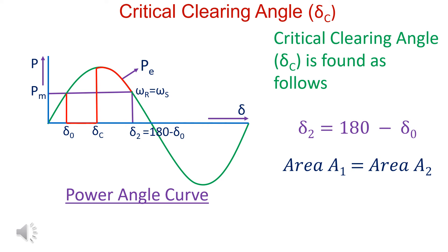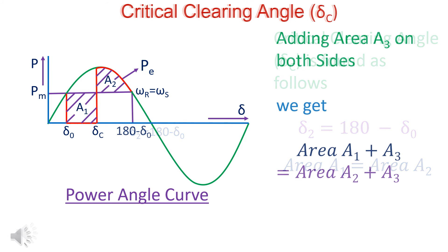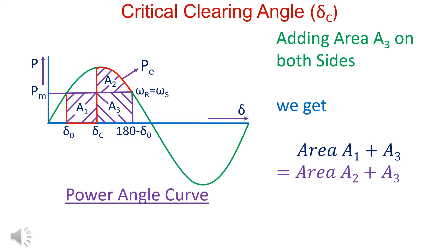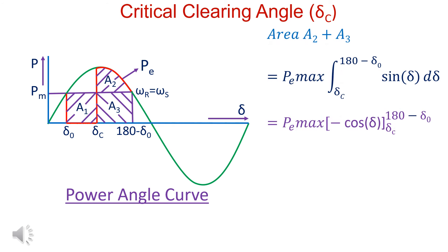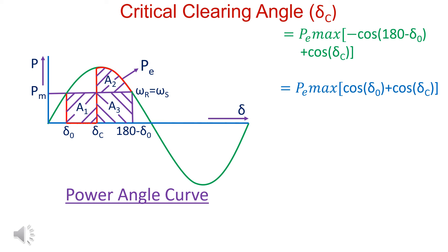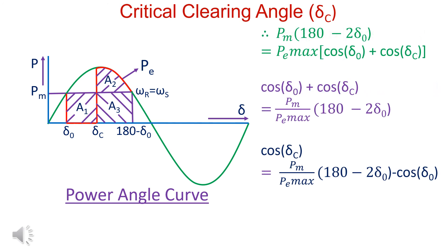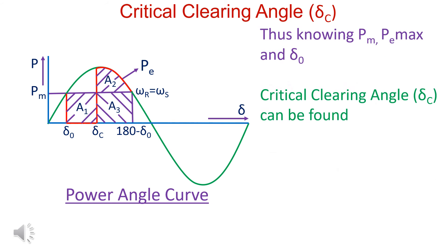To find the critical clearing angle, delta_2 is equal to 180 minus delta_0, and area A1 equals area A2. Adding area A3 to both sides gives A1 plus A3 equals A2 plus A3. Integrating Pe from delta_C to (180 minus delta_0) yields Pe_max times (cos delta_0 plus cos delta_C). Solving, we get cos(delta_C) equal to (Pm / Pe_max) minus cos(delta_0), allowing delta_C to be found from Pm, Pe_max, and delta_0.